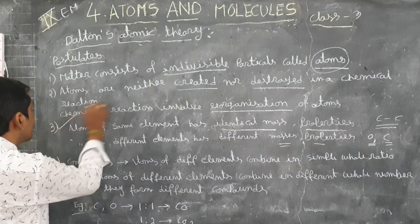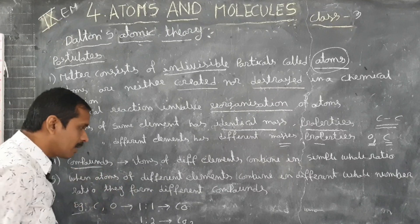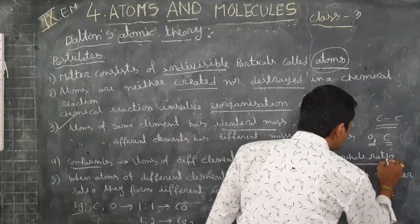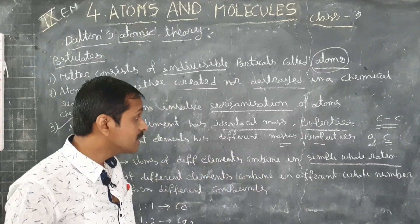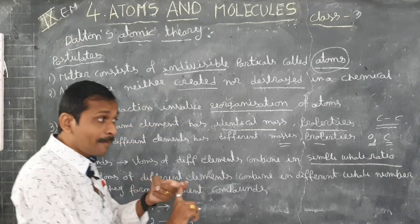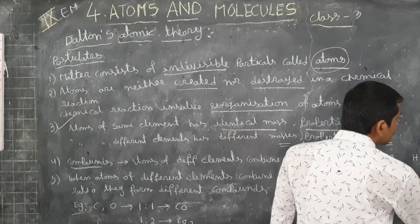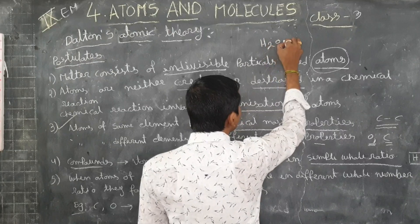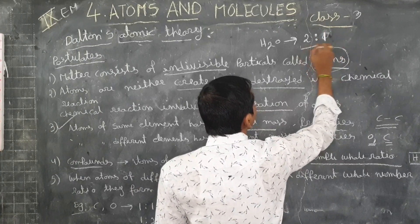The fourth point of Dalton's Atomic Theory: compounds are formed when atoms of different elements combine in a simple whole number ratio. Whole number ratio means whole numbers. For example, take H₂O — H₂O is a compound. In H₂O, hydrogen has two atoms and oxygen has one atom — a 2:1 ratio. This is a whole number ratio.